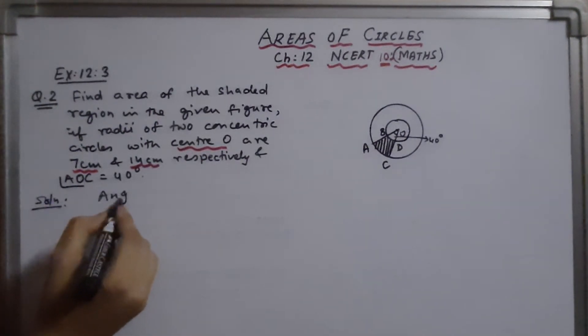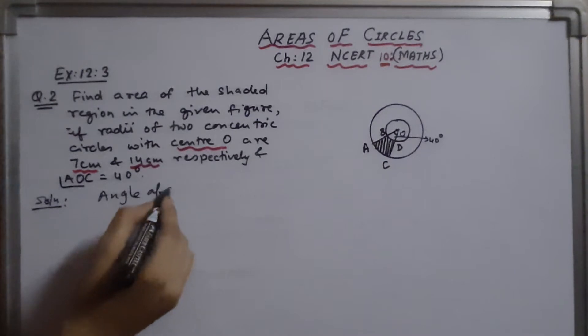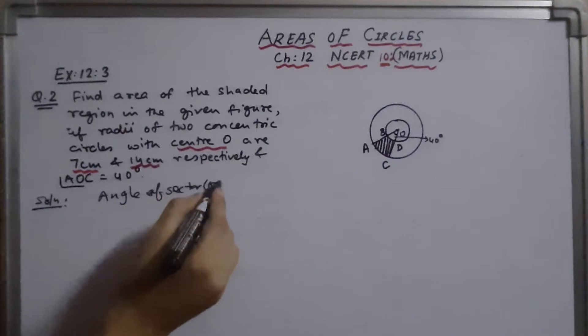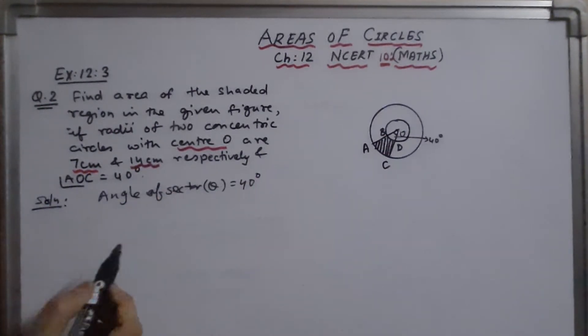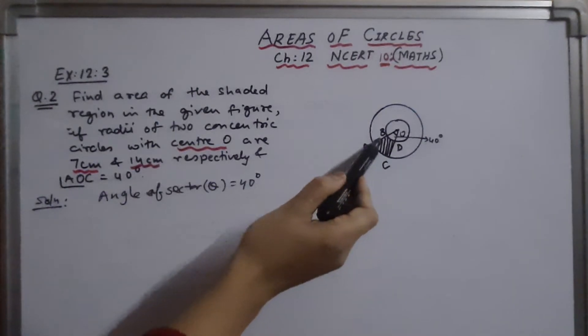Angle of sector. Angle of sector, that is theta, is 40 degrees. Second, first we take area of smaller circle, that is BOD.